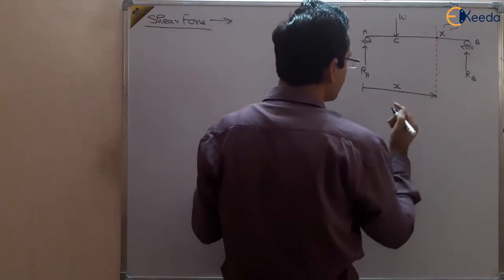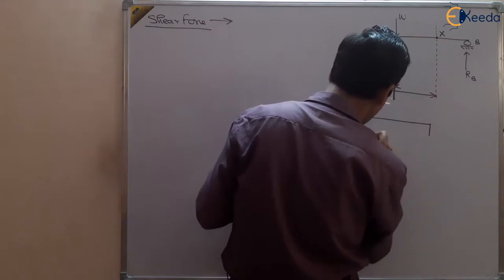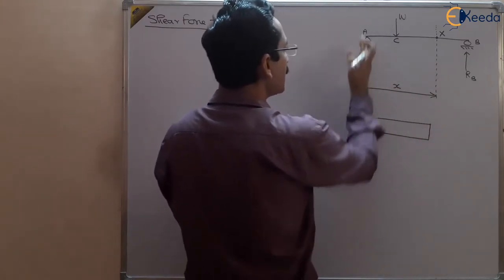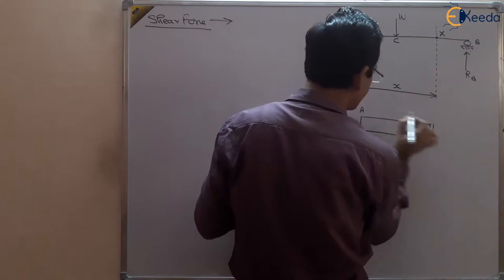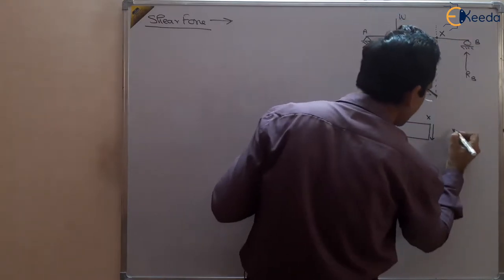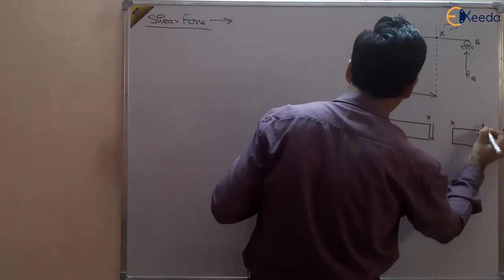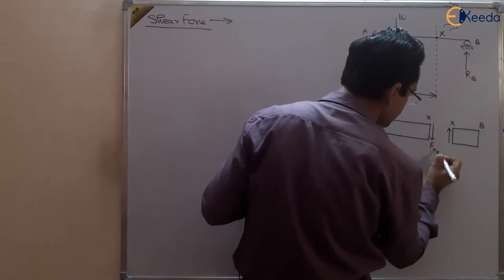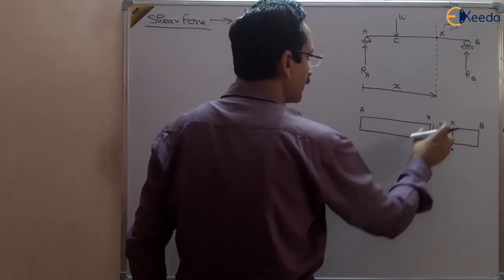There will be shear force at this point. If we break this beam, you will find this type of condition. This is upward, this is downward. So some shear force will be developed in the beam like this. This part is AX, and here at the X part there will be some shear force developed. And this is XB — another part of the beam. So the resisting shear force will be like this. This will be the shear force FX acting at point X.